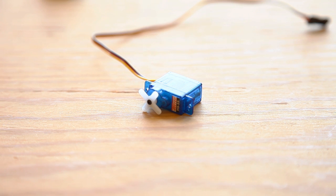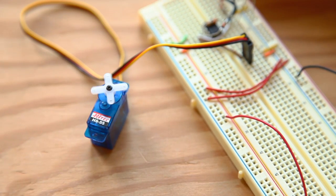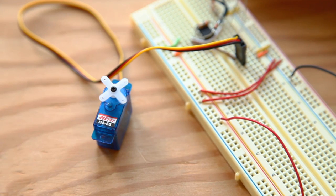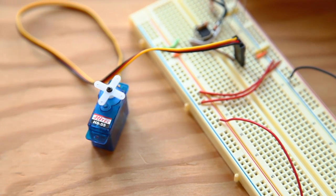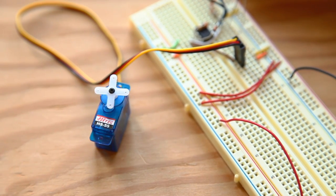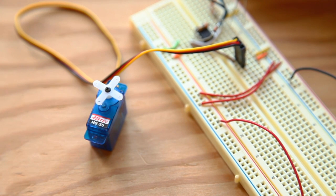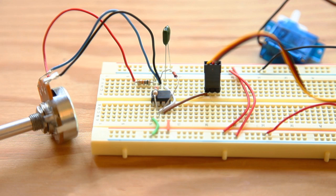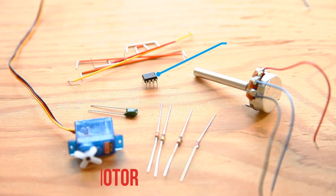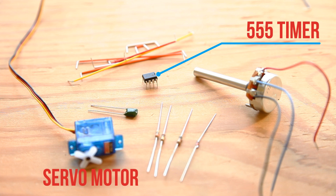Servo motors are frequently the muscle behind robots and in other applications like RC vehicles. They allow you to direct the motor shaft and what it's attached to, to a precise location. In our experiment, using a very clever little hack of a 555, we'll get the servo to move where we want it, where it would normally take much more sophisticated electronics.